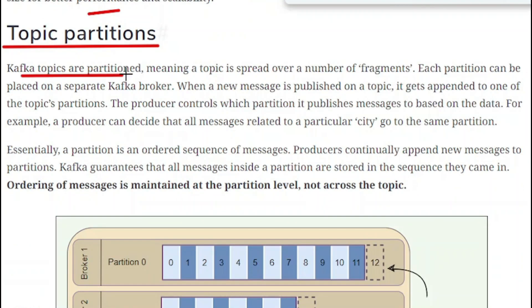Kafka topic is partitioned, meaning the topic is spread over a number of fragments. Each partition can be placed on a separate Kafka broker. When a new message is published on the topic, it gets appended to one of the topic's partitions. So topic partitions simply means the topic is broken down into a number of fragments, and each fragment is called a single partition. That partition can be placed on the same broker or on separate brokers.